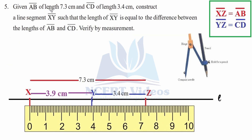Question five: given line segment AB of length 7.3 cm and CD of length 3.4 cm, construct line segment XY such that its length equals the difference of AB and CD. Verify by measurement. This is similar to the previous question, except we take the difference instead of addition. Draw line L and place points X and Y. First draw XZ equal to AB, that is 7.3 cm.